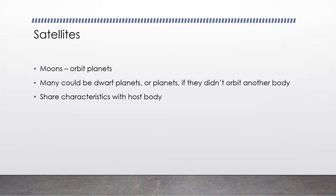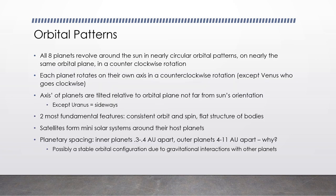In addition to bodies orbiting the sun, there are bodies orbiting planets, called satellites or moons. Many of these satellites may be dwarf planets or even planets in their own right if they weren't orbiting another body. Astronomers have identified 68 satellites for Jupiter, 61 for Saturn, 27 for Uranus, 13 for Neptune, one for Earth, two for Mars, one for Eris, and three for Pluto. Satellites tend to share characteristics with their host body — for example, our Moon is rocky, as is Earth.